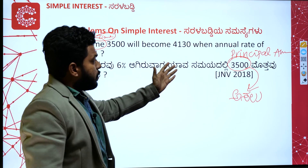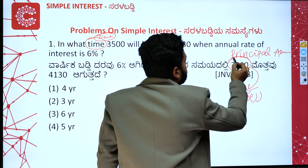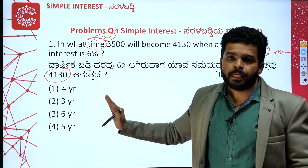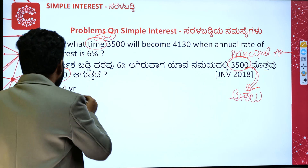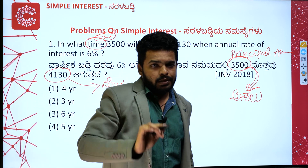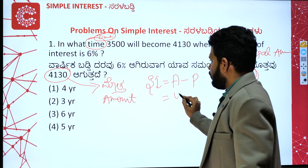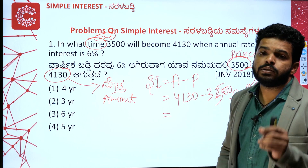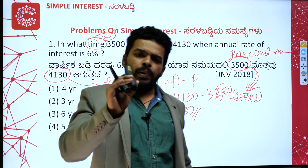Reading the question: the smallest number is the principal amount, so principal P = 3500. The largest number is the total amount = 4130. Simple interest is not directly given, but we know that amount = principal + simple interest. So, simple interest = amount minus principal = 4130 minus 3500 = 630. Therefore, SI = 630.